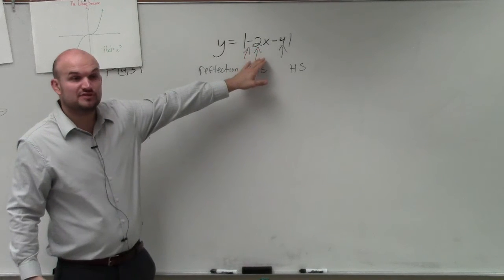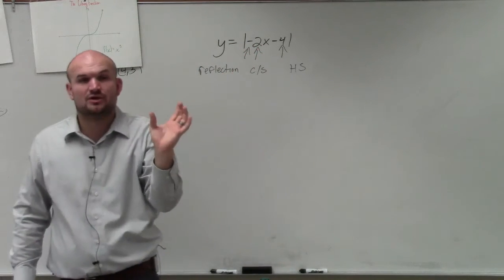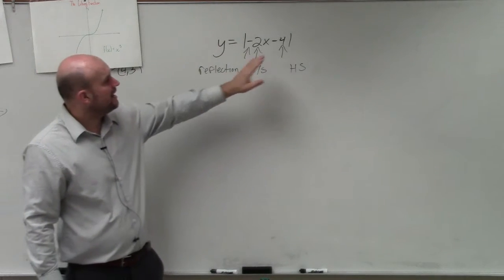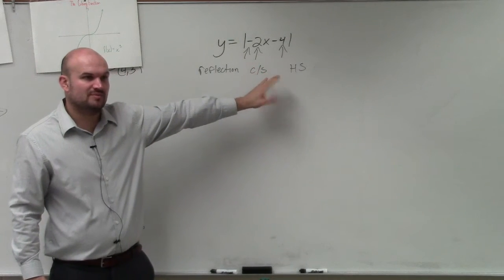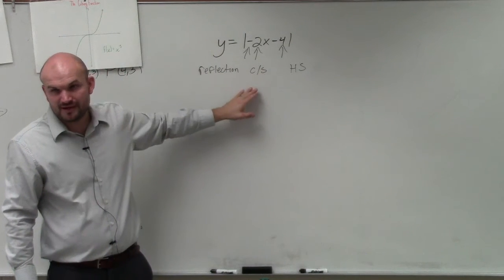We see there's a value of 2, the absolute value of 2, which is larger than 1. Therefore, it's a horizontal compression. And then you see there's a horizontal shift. But there's an issue here - we're actually going to want to rewrite this problem.